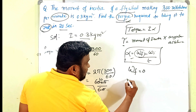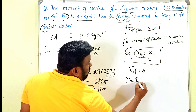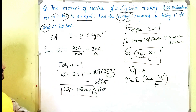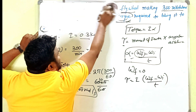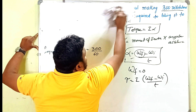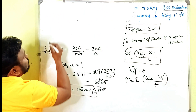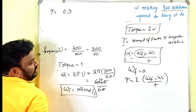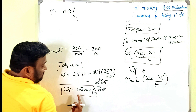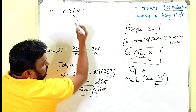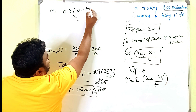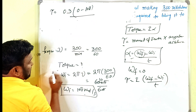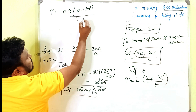Substituting into the torque formula: τ = I × (ω_f − ω_i) / t = 0.3 × (0 − 10π) / 20. The time t = 20 seconds, as the flywheel must come to rest in 20 seconds.